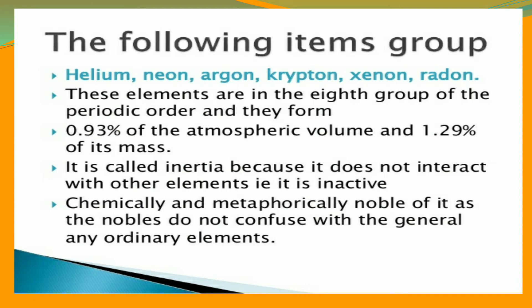These elements — helium, neon, argon, krypton, xenon, and radon — are in the 8th group of the periodic table and form 0.93% of the atmospheric volume and 1.29% of its mass. They are called inert because they do not interact with other elements; they are chemically inactive, and metaphorically noble, as noble elements do not mix with ordinary elements.